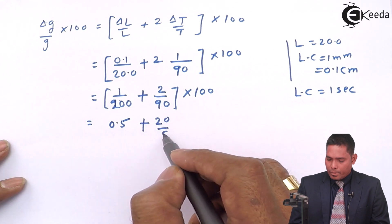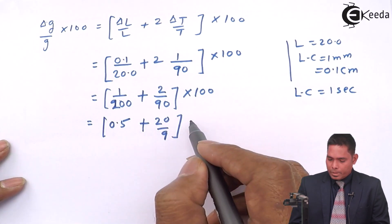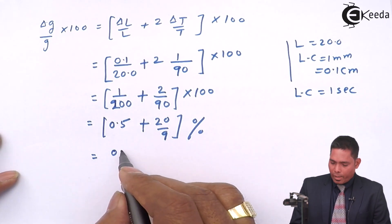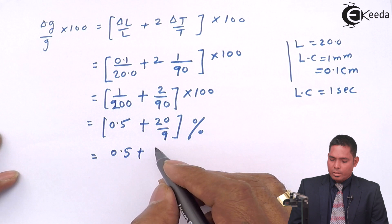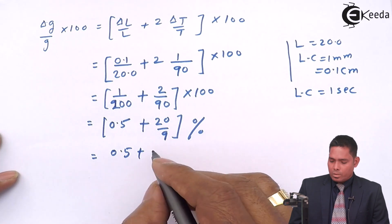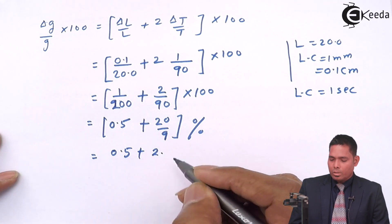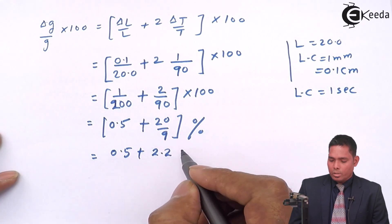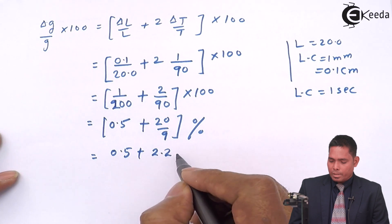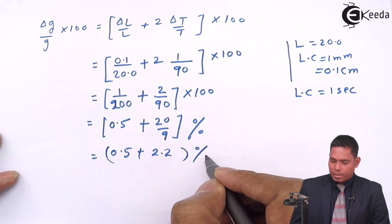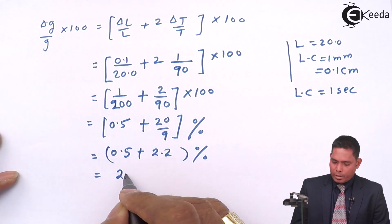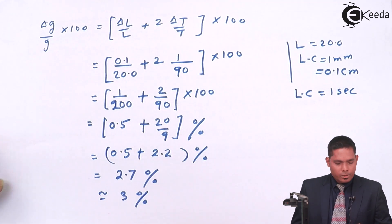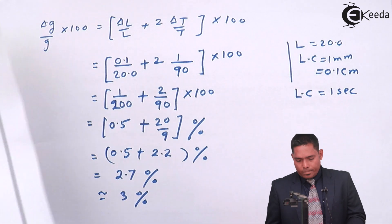This comes out to be—so this is 0.5 plus this is 9 into 18, 20, 20, then 9 into like that. So approximately this is 2.7 percent, which is nearly three percent. So therefore the answer is three percent.